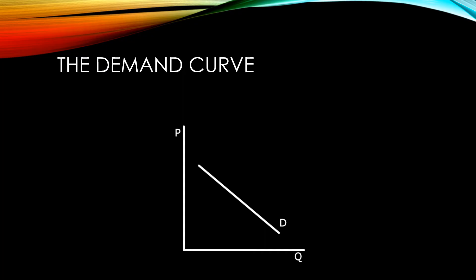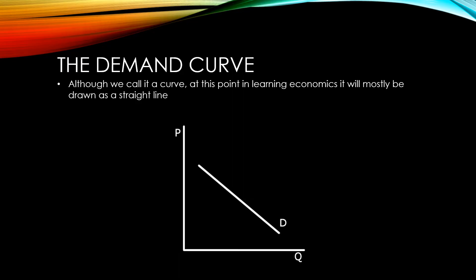The demand curve is a graphical representation of demand for a product. Although we call it a curve, at this point in learning economics it will mostly be drawn as a straight line. The y-axis is labelled with P for price, the x-axis is labelled with Q for quantity, and the demand curve itself is labelled with a D.